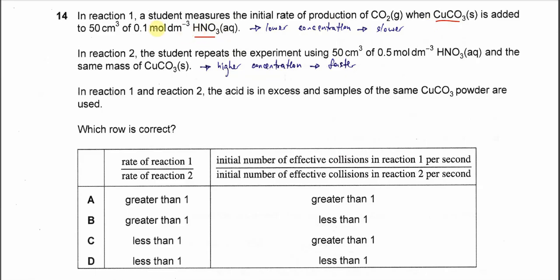The concentration of nitric acid is 0.1 mol per dm³. In the second reaction, the student repeats the experiment using the same volume but at 0.5 mol dm⁻³, which is five times higher. The mass of copper carbonate remains the same.